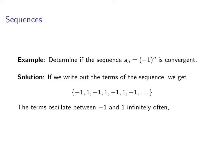The terms are oscillating between negative 1 and 1 infinitely often. So the terms of the sequence, they're not approaching any number. They're constantly going back and forth.